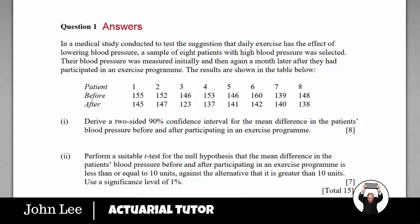The 90% confidence interval from part one is 5.47 to 16.0. The p-value in part two is 39.8% and so we will not reject the null hypothesis. I'll now go through the solution.